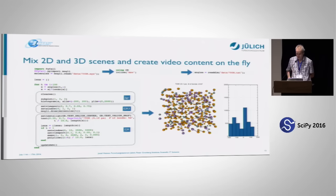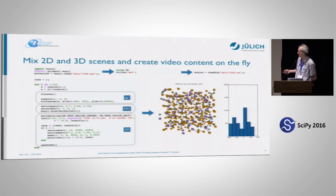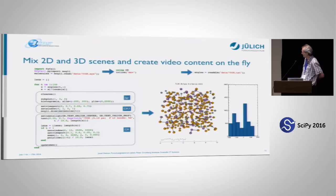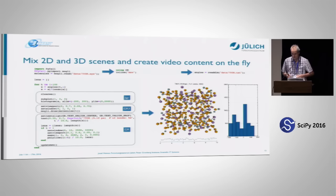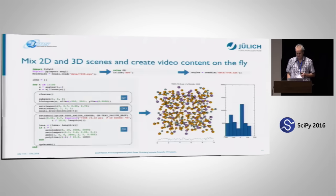As mentioned before, you can mix two-dimensional and three-dimensional scenes. You can see three different parts: a part with simple MATLAB-like commands, a part with three-dimensional commands, and a part with very basic commands to plot a line graph. You can produce such visualizations on the fly. For example, this histogram could have been created by Matplotlib, but molecular plots like this are not possible in Matplotlib right now. In this case you can mix them as you want.